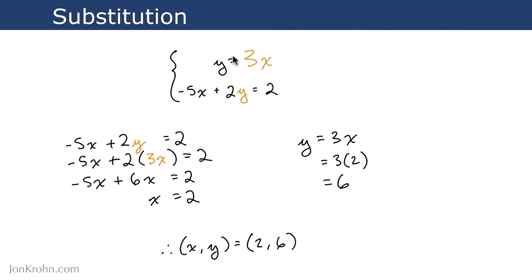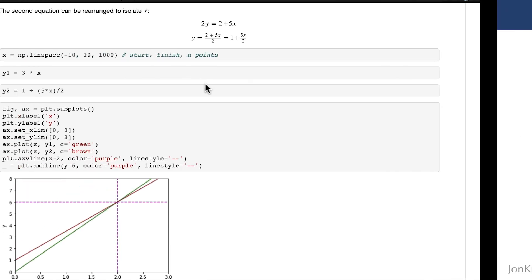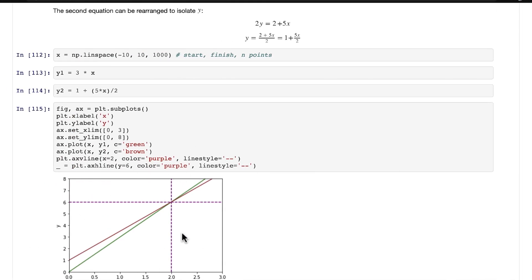So hopefully that's helpful for understanding visually what we're doing when we're solving for unknowns in a system of linear equations. We have just two dimensions here, x and y, so we can visualize this in a two-dimensional plane. If we had x, y, and z, then we could use a 3D plot to show a point in 3D space that we're solving for. Beyond that, it would be hard to create a visualization in four dimensions and so on.